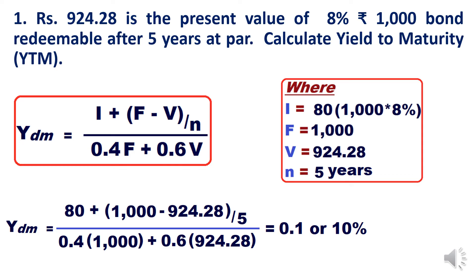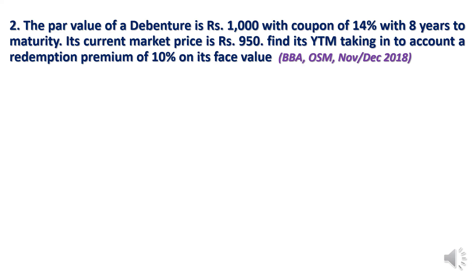Multiplying by 100 gives 10% — this is the approximate YTM. It is not exact but a close approximation. Now let's see one more question, which was asked in Osmania University BBA question paper, November–December 2018: the par value of a debenture is Rs.1000, coupon rate of interest is 14%, with eight years to maturity, and its current market price is Rs.950.